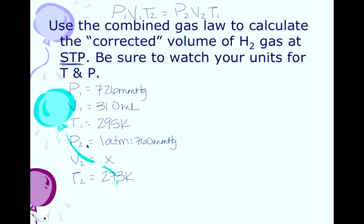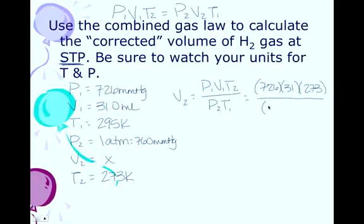So, rearrange this guy to solve for V2, and you get that V2 equals P1V1T2 over P2T1. Plug your numbers in: 726, 31, 273, divided by P2 is 760, T1 was 295. Plug this into your handy little calculator, and you end up with 27.4 milliliters.